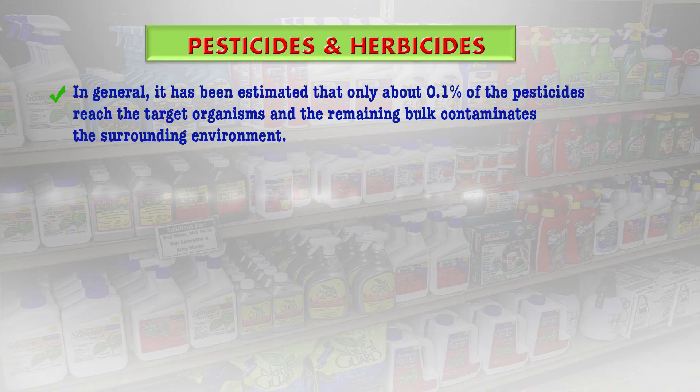Ideally, applied pesticides should only be toxic to the target organism — whether it is a herb, insect, or pest — and should not affect other organisms. They should be biodegradable and eco-friendly. Unfortunately, this is rarely the case, as most pesticides are non-specific and may kill organisms that are harmless or useful to the ecosystem. It has been estimated that only about 0.1% of pesticides reach the target organisms, while the remaining bulk contaminates the surrounding environment.